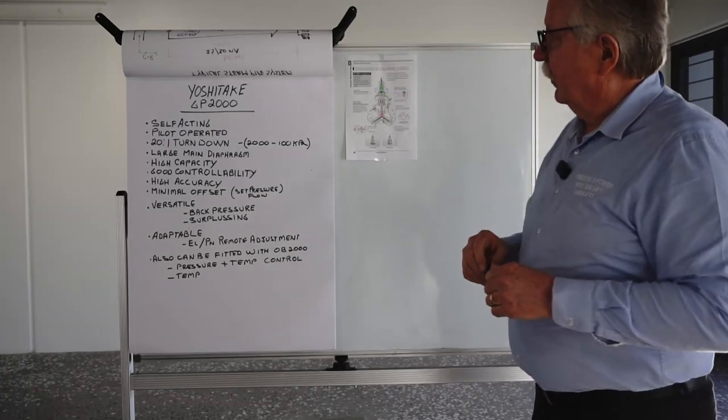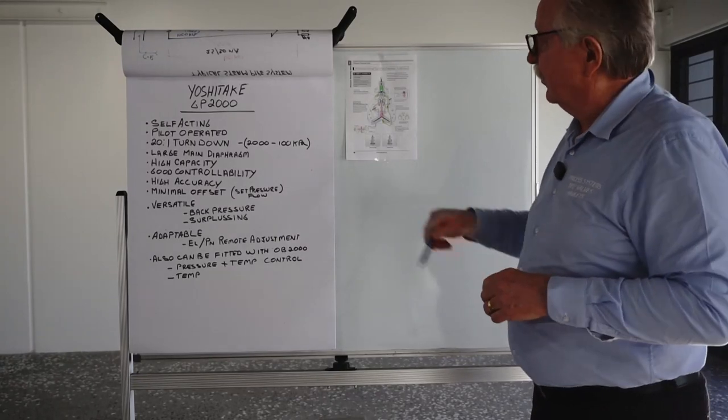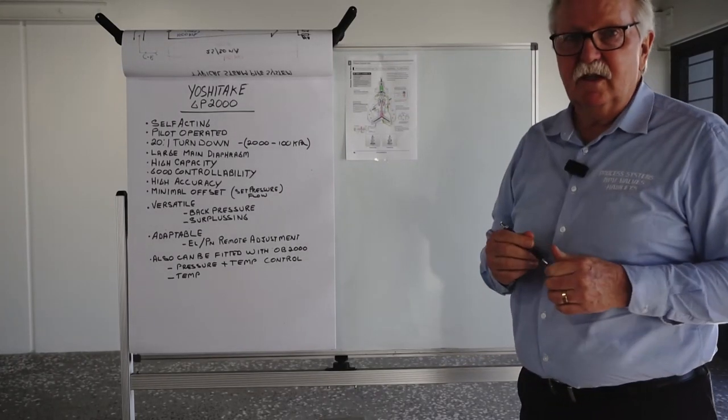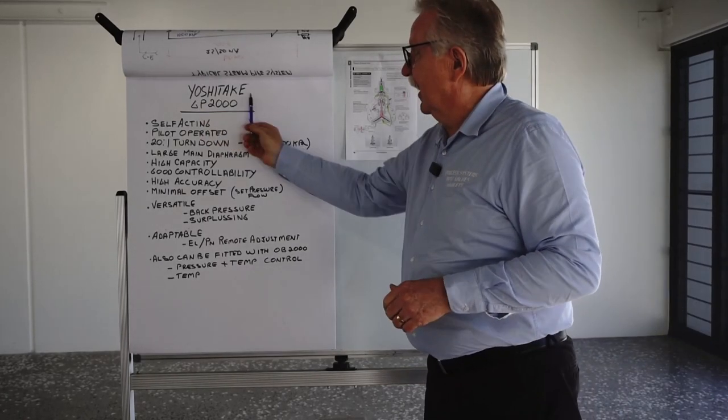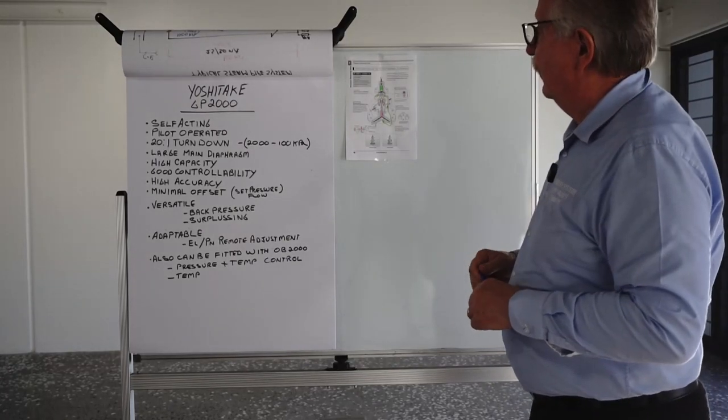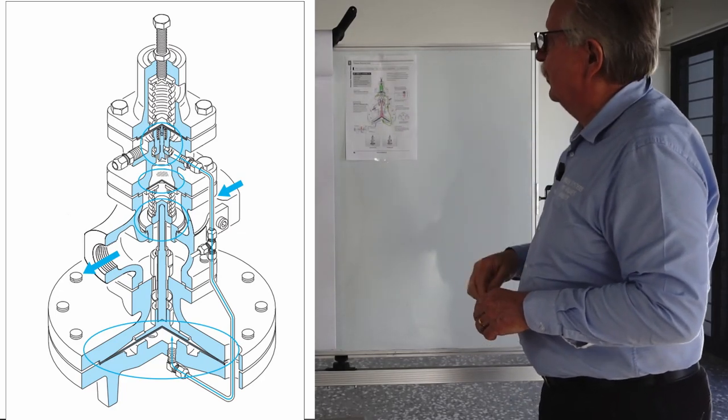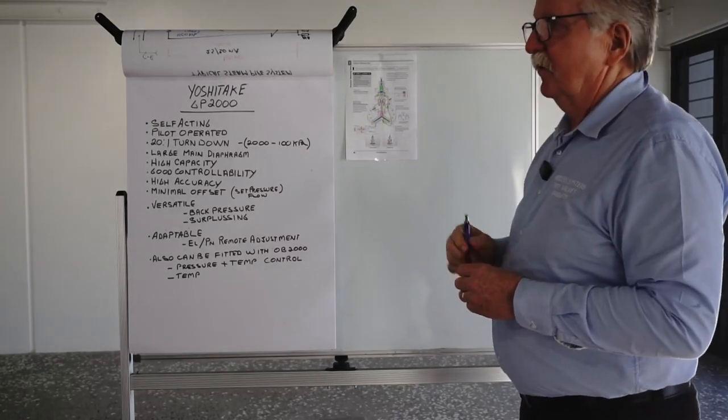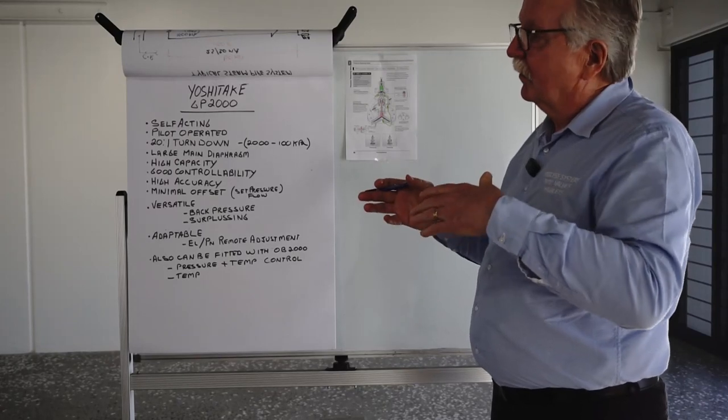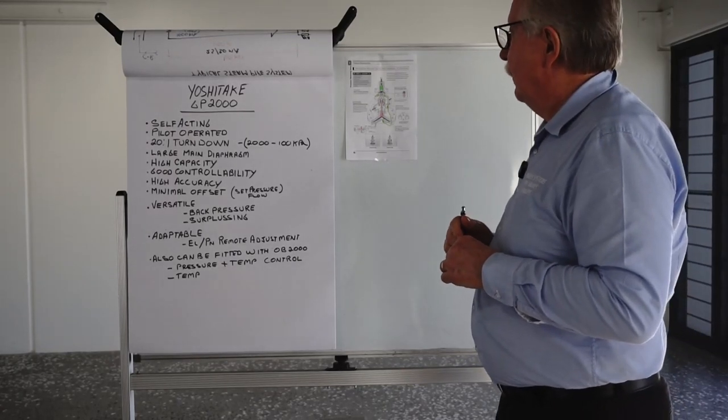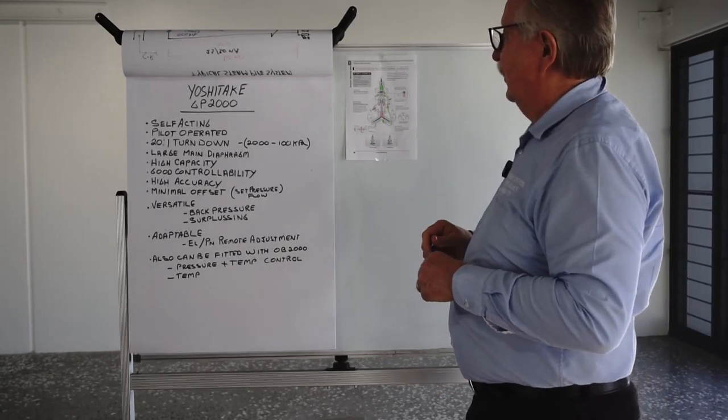Okay and now we're going to talk about the actual pressure reducing valve itself. As you saw in the previous slide that we had up, I said that we selected a 25mm GP2000. GP2000 is the Yoshitake brand. That's one of the products Process Systems supply. And this is typical of what it might look like depending on what size you buy. But they have some distinguishing features which I'll just go through here. Which makes them a little bit different to other types of pressure reducing valves that may be on the market. It doesn't mean that the other ones won't do the job. This is just about the Yoshitake GP2000.